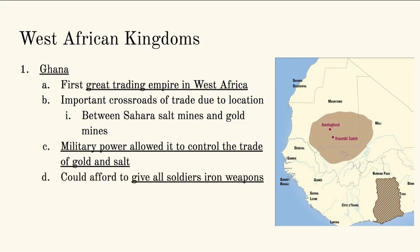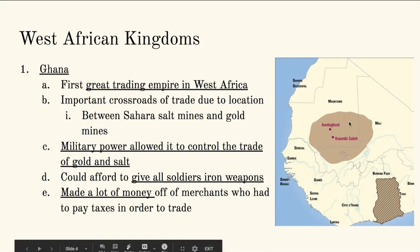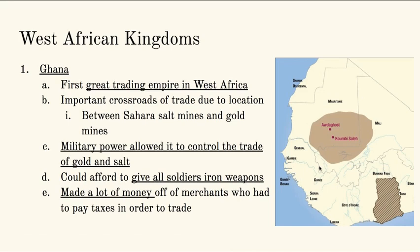Ghana could afford to give all soldiers iron weapons — especially for the time, their military power was not only wealthy because of the money they were collecting, but because they had quality weapons for every single soldier. They made a lot of money off of the merchants traveling back and forth. As a merchant going through Ghana, you'd have to pay taxes — a fee to enter the empire and trade things. When the empire collected those taxes, they were able to make sure that their people and soldiers had a lot of money.